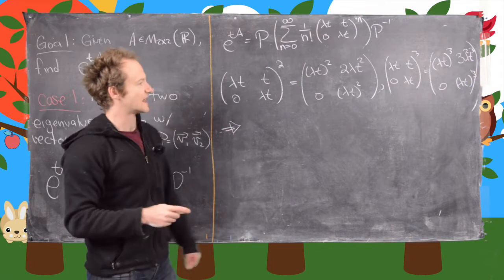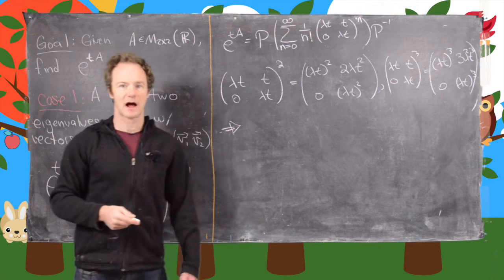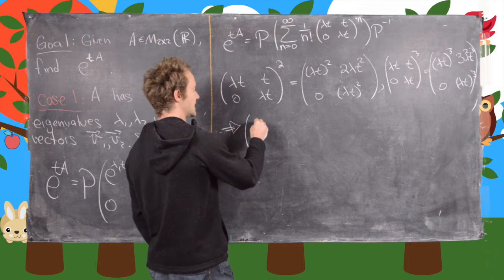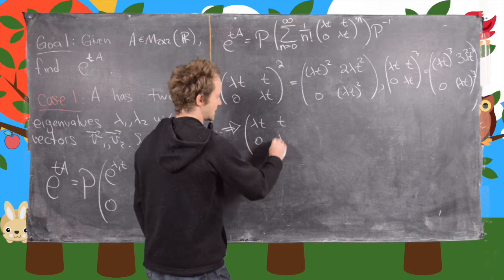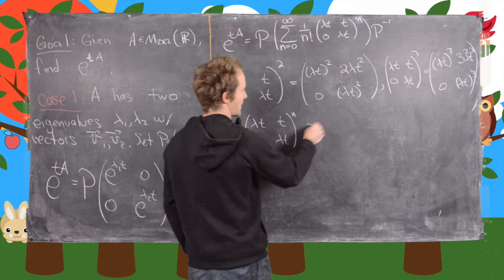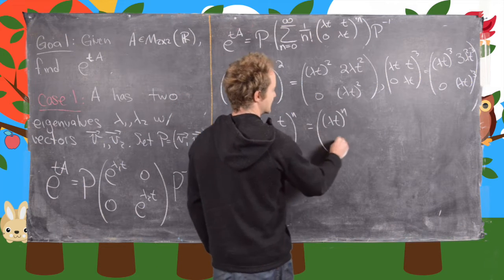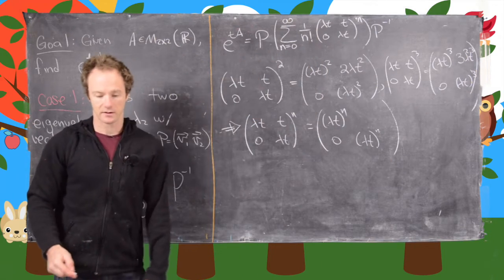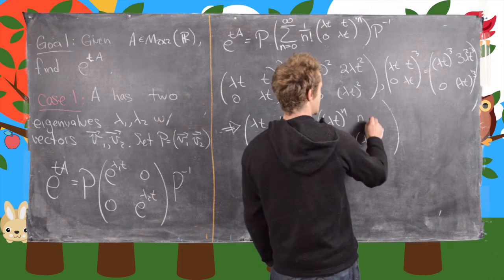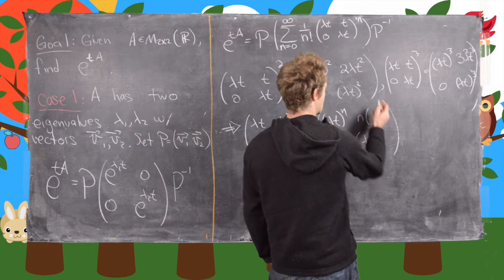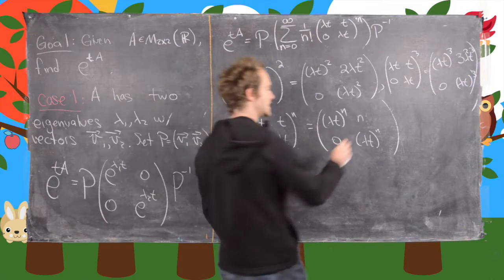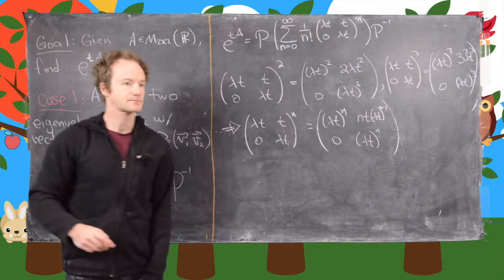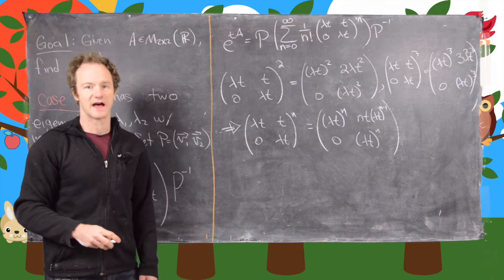Now we can look at this and guess what the arbitrary power is — we could prove it by induction, it wouldn't be too hard. The matrix (lambda T, T, 0, lambda T) to the nth power has (lambda T) to the n on the diagonal, and on the off-diagonal we have n times T times (lambda T) to the n minus 1.